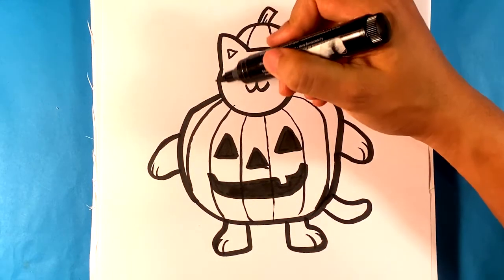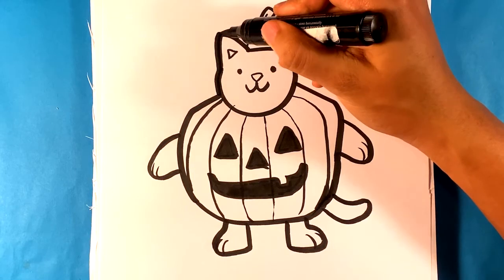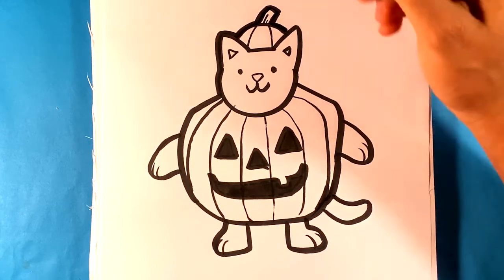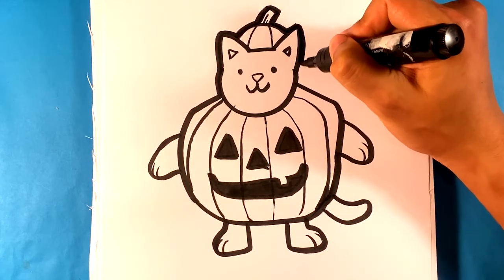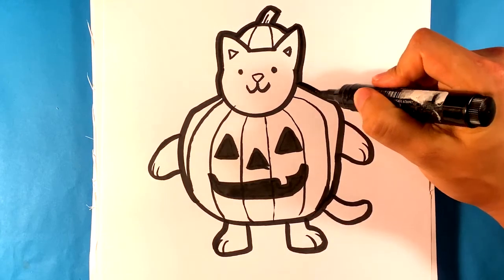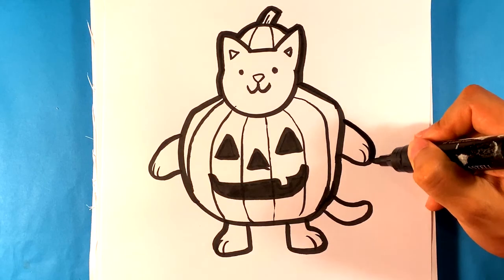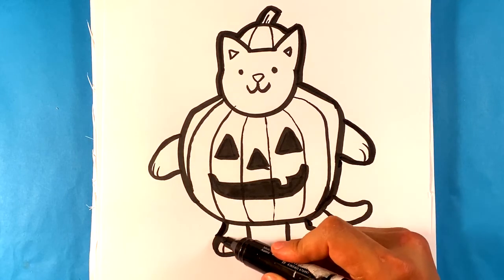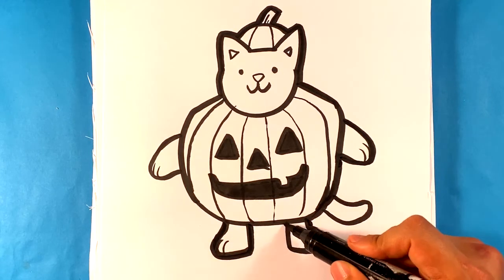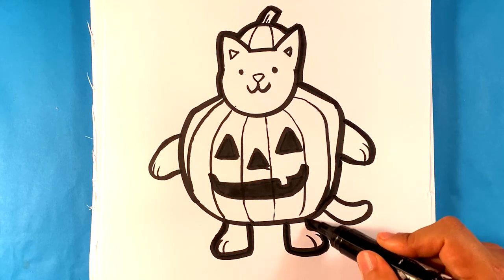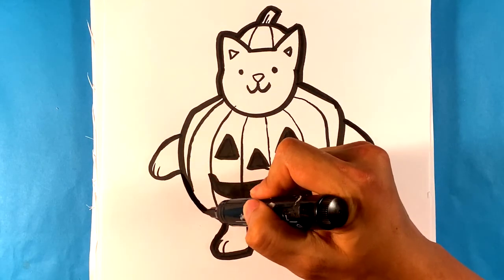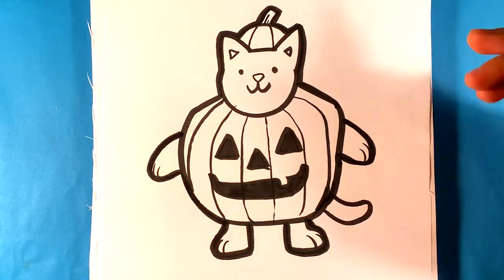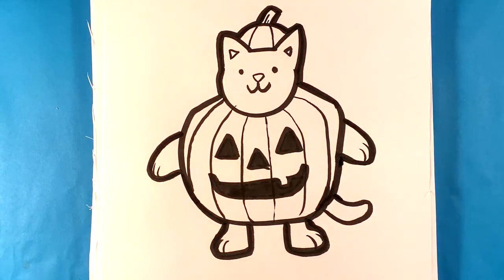The last thing you can probably do is you can draw like a thicker outline on the whole thing, which we call the contour, which is really just the outer, the outermost shape of everything. Yeah, just to kind of make that just a little bit thicker everywhere. And that is pretty much it.